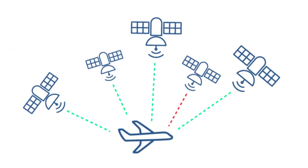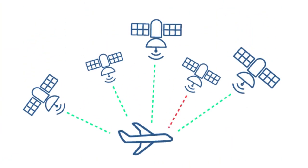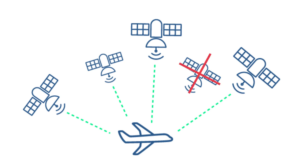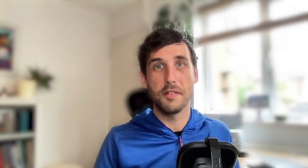RAIM accesses a broad constellation of satellites across the globe to detect and then exclude faulty signals that could show inaccurate positioning. The position is then recalculated minus the faulty signals, resulting in a far more accurate position being plotted.